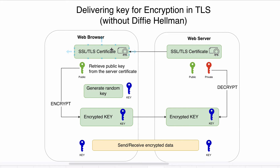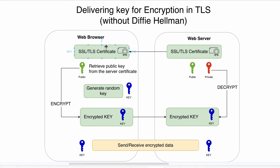First, the client sends a list of supported cipher suites, and the web server chooses one of those suites. After that, the web server sends its certificate to the web browser. The web browser verifies that certificate, and if verification was successful, it means the web browser has authenticated the web server.